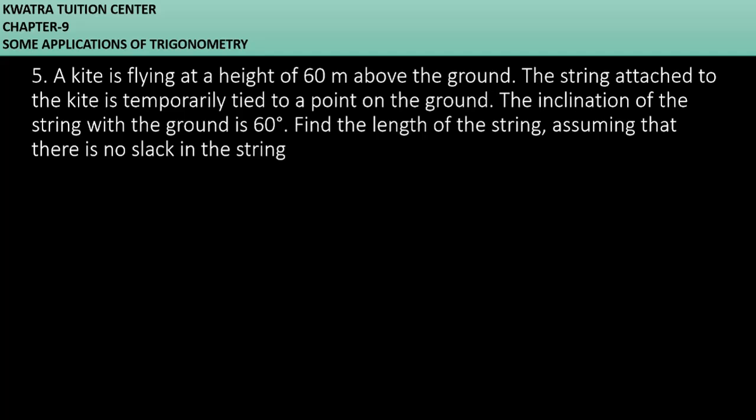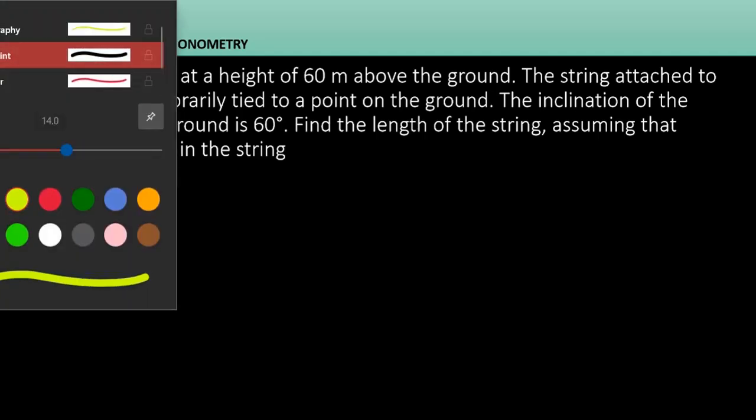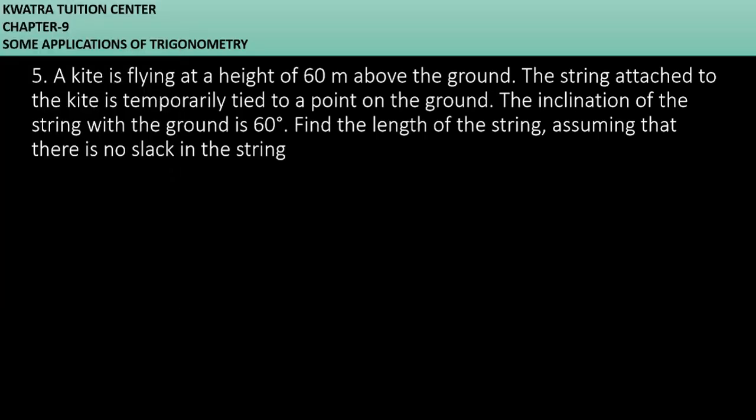So here we have the information. First, it is said that our kite is flying at a height of 60 meters, 60 meter height above the ground. So this is your height of the kite. The other thing they told you is to find the length of the string.